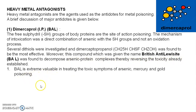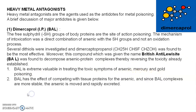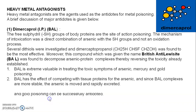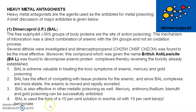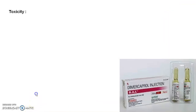BAL is extremely valuable in treating the toxic symptoms of arsenic, mercury, and gold poisoning. BAL effectively competes with tissue proteins for arsenic — since the BAL complex is more stable, arsenic is more rapidly excreted. BAL is also effective in metallic poisoning: mercury, antimony, thallium, bismuth, and gold poisoning can be successfully treated. BAL is used in the form of a 10% solution of arachis oil with 10% benzyl benzoate solution.